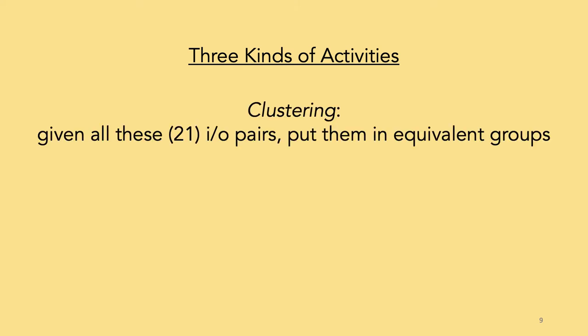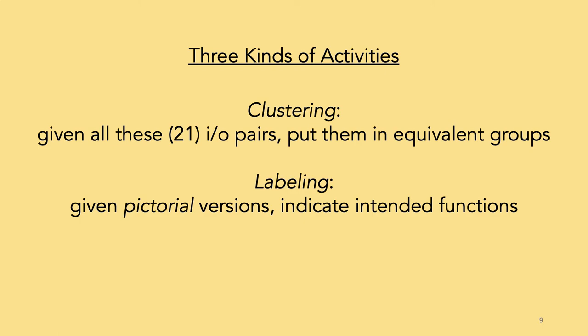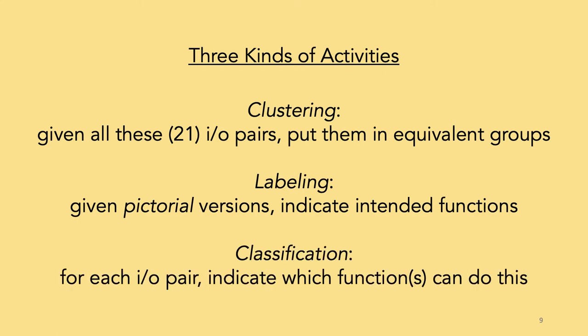In designing tasks for students, we were inspired by activities in machine learning. We asked students to do three kinds of tasks: clustering, labeling, and classification. In our use, clustering is putting things into groups based on similarity, labeling is giving tags to pictures, and classification is giving tags based on input-output behavior — exactly like we saw earlier in the talk. We very carefully designed sets of input-output pairs to cover various characteristics we wanted, including ambiguity and impossibility.